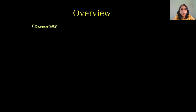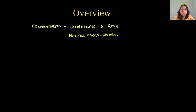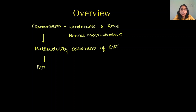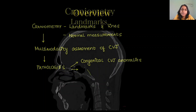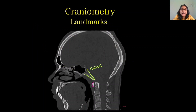In this video, first we'll be learning about craniometry — that is the landmarks, lines, and angles — then their normal measurements. Later we'll move on to multimodality assessment of craniovertebral junction, and in brief about the pathologies, mainly involving the congenital CVJ anomalies.